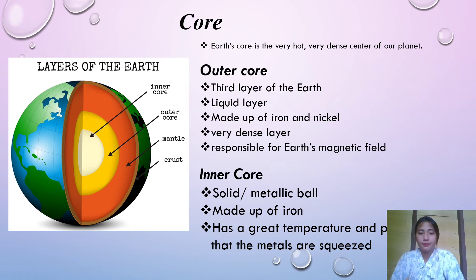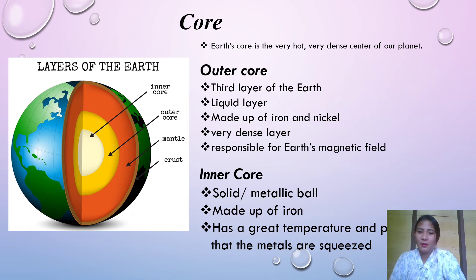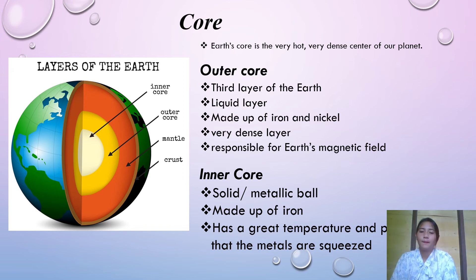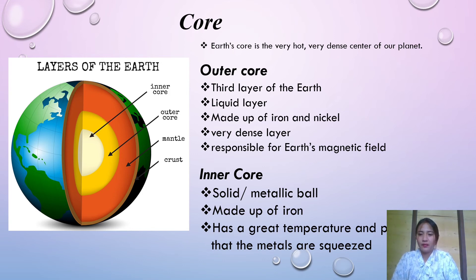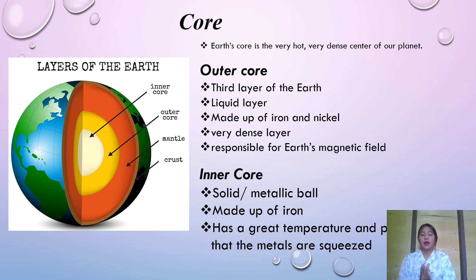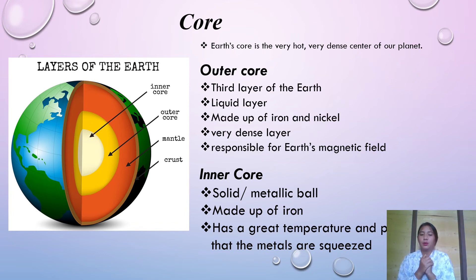The inner core is a solid metallic ball, because of the weight applied by the other layers above it — the crust, mantle, and the outer core. The inner core is made up of iron. While the outer core is made up of iron and nickel, the inner core is made up of iron itself. It has great temperature and pressure so that the metals are squeezed together, which is the reason the inner core became solid. That's all for my presentation. Thank you.